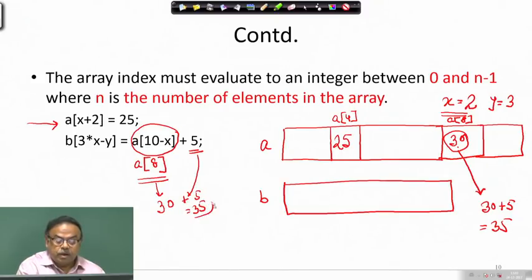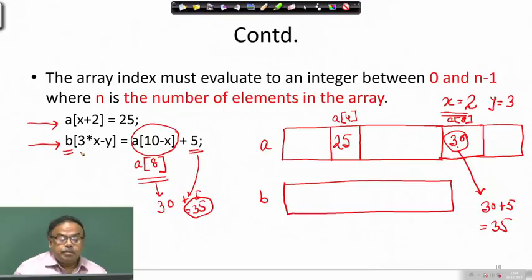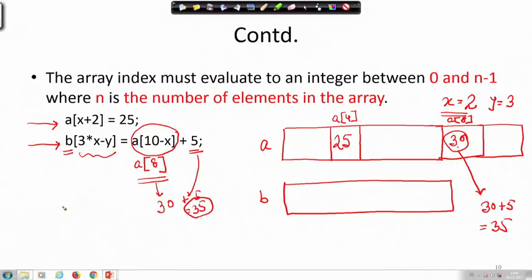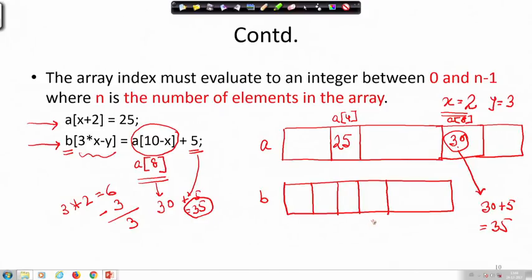We take the value 30 from a[8] and add 5 to get 35. Now we store that in array b. We compute the index: 3 times x is 6, minus y which is 3, gives 3. So in b[3] - the fourth element of array b - we store the value 35.